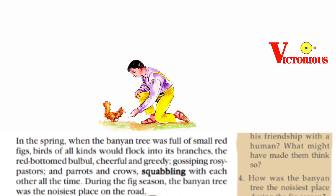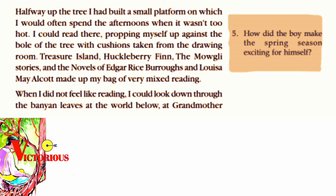There is a question on the right side — the fourth one: how was the banyan tree the noisiest place during the fig season? During the spring season the tree had many red fruits, and hence various kinds of birds — parrots, crows, bulbuls, etc. — came to its branches to enjoy the fruits. That is why the banyan tree was the noisiest place during the fig season.